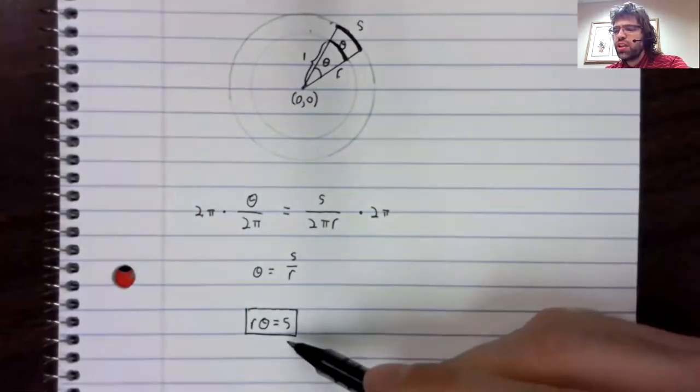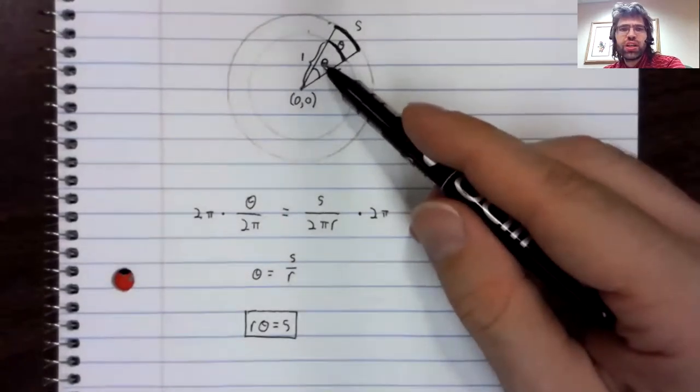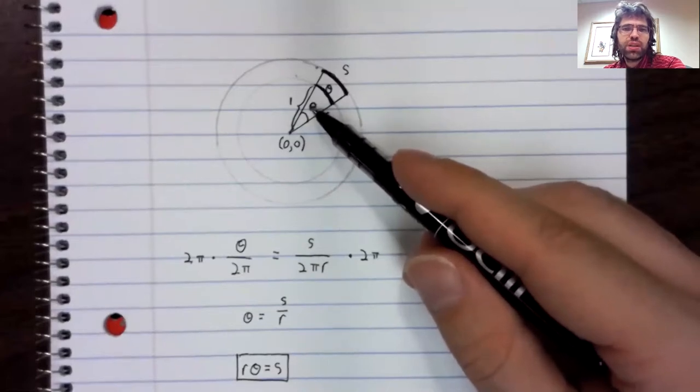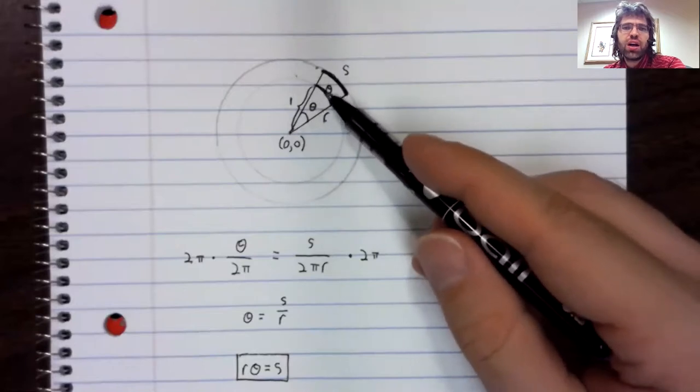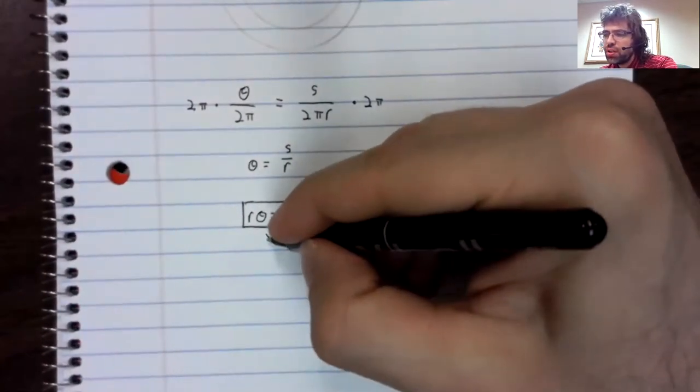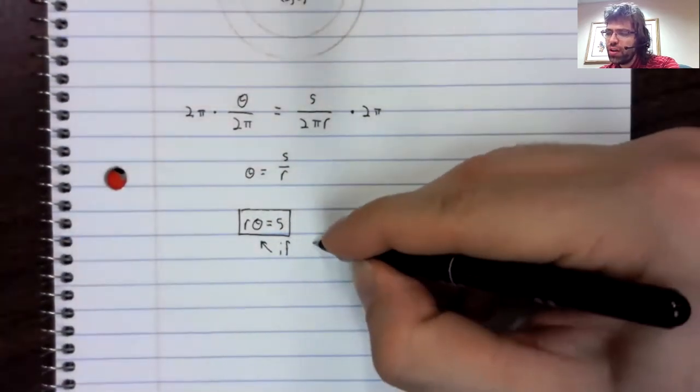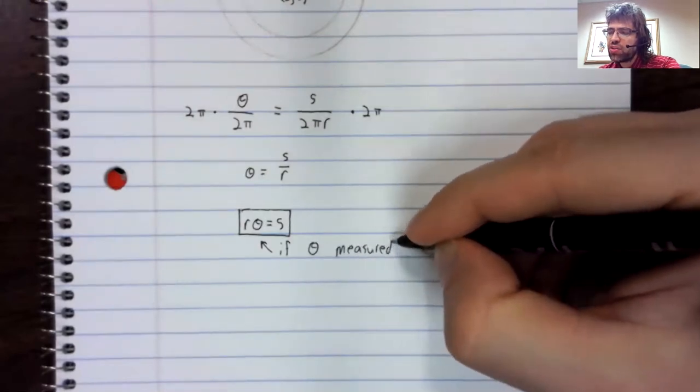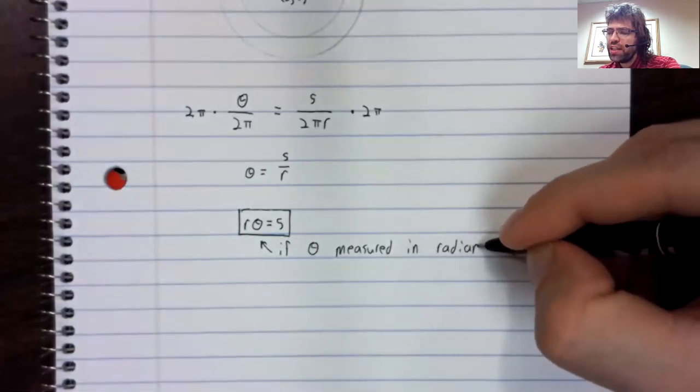And this relationship is only true if theta is being measured in radians. We used the fact that theta was being measured in radians to say that this arc had length theta. So let me write that down. This is true if the angle theta is measured in radians.